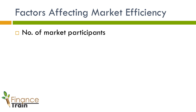In reality, the markets are not efficient. We can also not say that they are totally inefficient. Depending on a combination of factors, markets exhibit varying degrees of efficiency. One such factor is the number of market participants. The more the number of participants — such as investors, traders, and other participants — the more efficient is the market. This is simply because the more participants actively involved, the faster any price anomalies will be identified and the faster they will disappear.